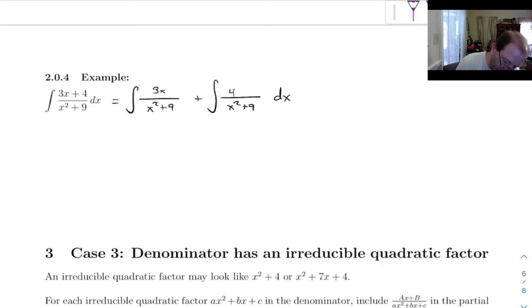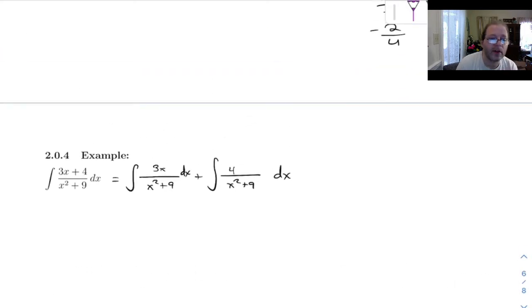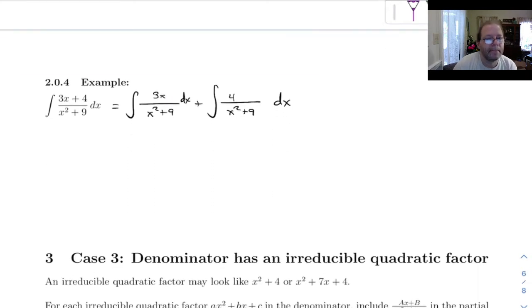And I'm going to go a little further and break it into two integrals like that. So now both of these are things we can do, but they're both very different. The first one, 3x over x squared plus 9, this one we'll do with a u sub. Let u equal x squared plus 9, du then will be 2x dx. And so x dx is going to be 1 half du.